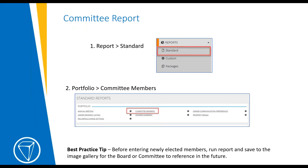To print a committee report — which prints the information about your committee members — go to Reports on the left side and select Standard Reports. In the standard reports section, select 'Committee Members' from the portfolio box. Best practice tip: before entering newly elected members, run the report and save to the image gallery for the board or committee to reference in the future.